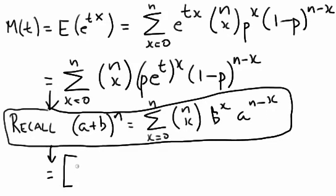So we have 1 minus p is a, plus b we said was p e to the t, to the n.